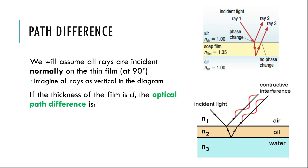Assuming the thickness of the film is d, the optical path difference is how much further ray 3 travels compared to ray 2. It goes down through the film and back up, so it's 2d physically. For the optical path difference, we multiply by the refractive index n — this accounts for the fact that the ray inside the film travels slower and its wavelength changes. So optical path difference = 2nd. This is how much further ray 3 goes compared to ray 2.